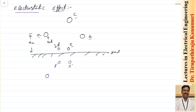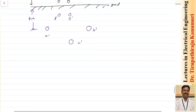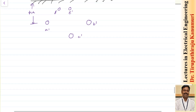Similarly, A will also have its image, C will also have its image, and B will also have its image below the ground. This is represented by B dash, C dash, and E dash. The distance will be the same — H_A will be equal to H_A dash. So now using the method of images, let us try to solve.